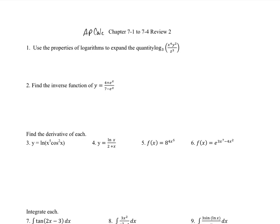The first one is a basic problem: use the properties of logarithms to expand log base 3 of x to the fourth y squared over z cubed. We use our basic logarithm properties — multiplication expands with addition and division expands with subtraction. So this becomes log base 3 of x to the fourth plus log base 3 of y squared minus log base 3 of z cubed. Then the exponents come out front: 4 log base 3 of x plus 2 log base 3 of y minus 3 log base 3 of z.